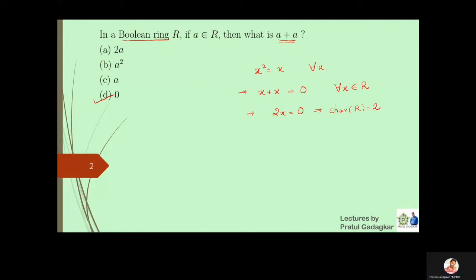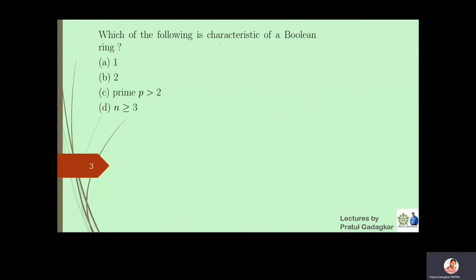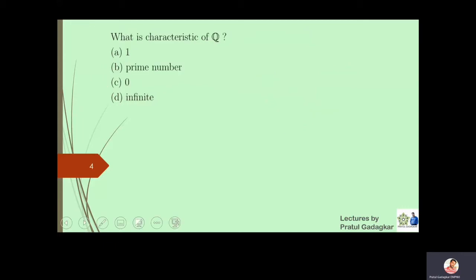The next question is: in a boolean ring, what is the characteristic? As just mentioned, the characteristic of a boolean ring is always equal to 2, because 2 times a equals zero for all a. If you can find the smallest positive natural number n such that n times a equals zero for all a, that n is called the characteristic of the ring. Here 2a equals zero for all a, so the characteristic of a boolean ring is 2.